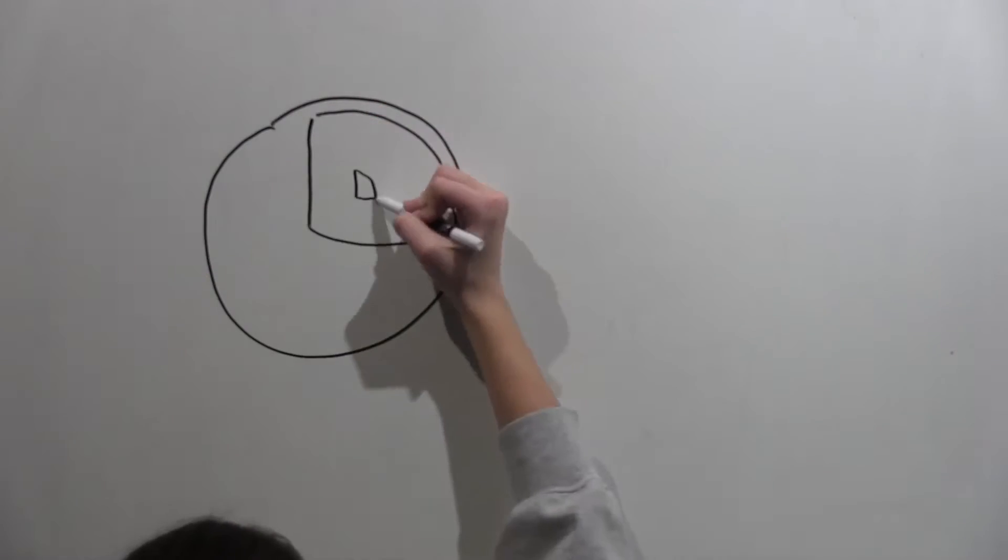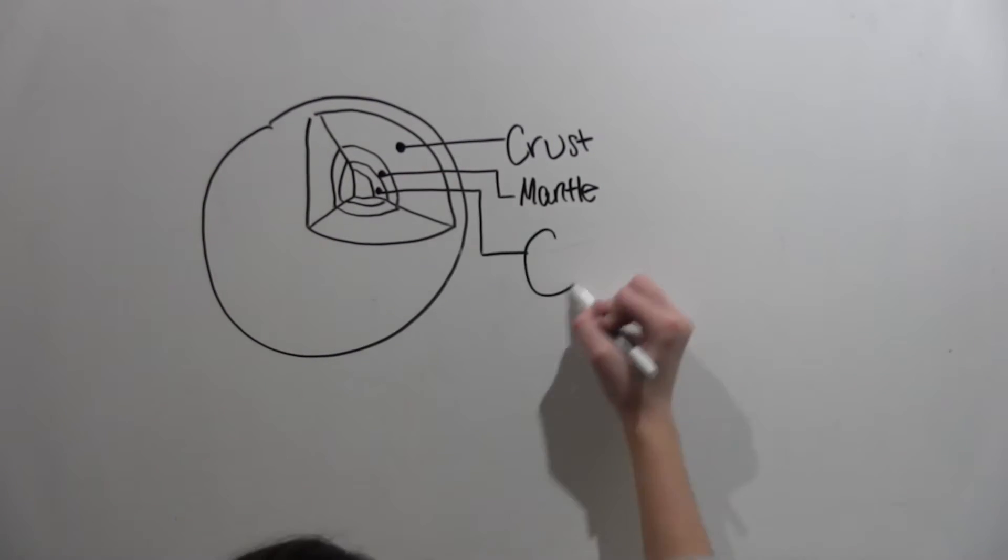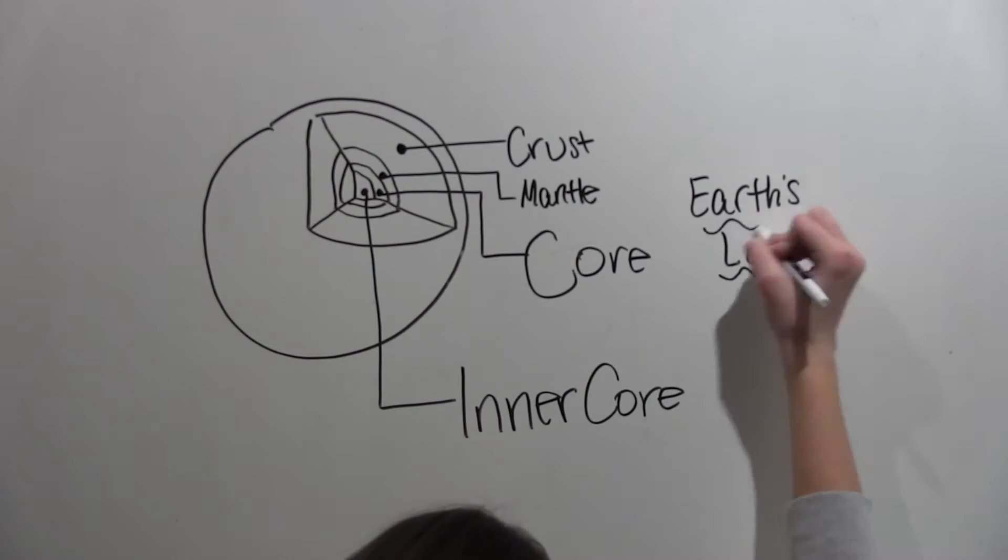Let's start off with the Earth's interior. Earth has layers sort of like an onion. It has four layers. They are the crust, mantle, core, and the inner core.